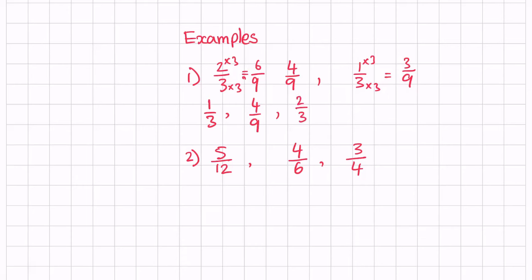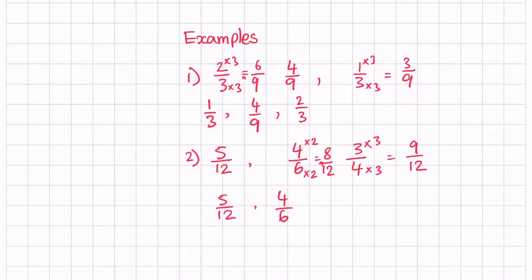Let's look at the next example: five twelfths, four sixths, and three quarters. Six and four are both factors of twelve, so we find equivalent fractions. Multiplying four sixths by two gives us eight over twelve, and multiplying three quarters by three gives us nine over twelve. We can see five over twelve is the smallest, so we write five twelfths first, then eight over twelve — but the original fraction is four sixths — and then nine over twelve, which is three quarters.